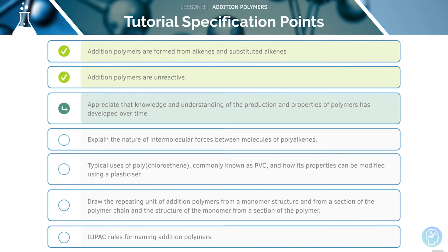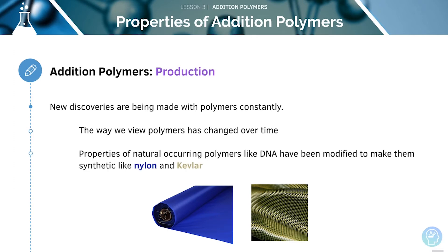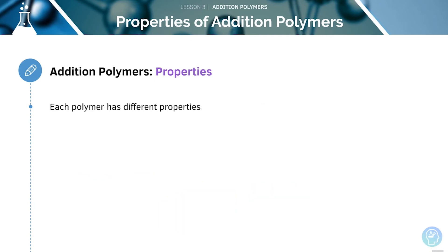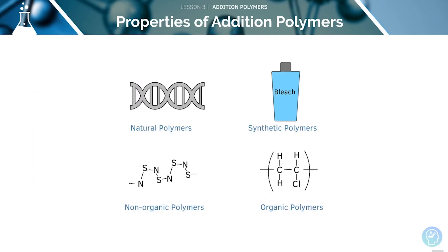We'll now look at how the understanding about polymers has developed over time. New discoveries are being made with polymers constantly. The way we view polymers has changed over time, as properties of naturally occurring polymers like DNA have been modified to make them synthetic, like nylon. Each polymer has different properties, and each one can have a different use and application in real life, as we can see here.